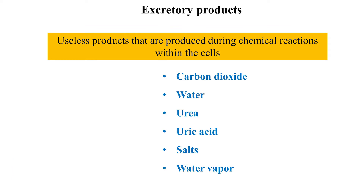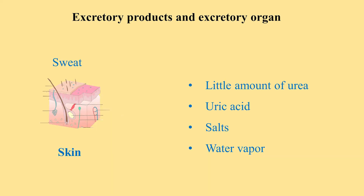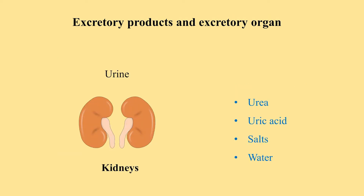Excretory products are produced within human cells during chemical reactions. Some of them are carbon dioxide, water, urea, uric acid, salts, and water vapor. Lungs excrete exhaled air, which contains carbon dioxide and water vapor. Skin excretes sweat, which contains small amounts of urea, uric acid, salts, and water vapor. Kidneys excrete urine, which contains urea, uric acid, salts, and water.